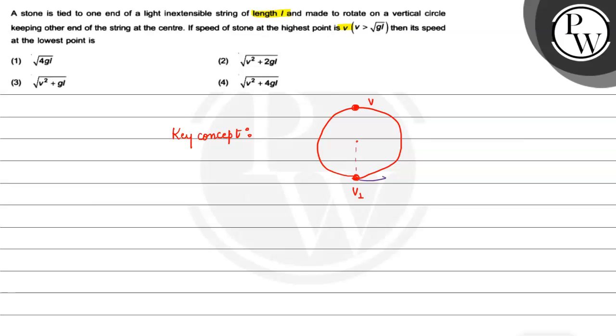At the highest point, velocity is V. At the lowest point, velocity is V1. And in this point at the highest point, the potential energy will be Mg into 2L. This is the distance from here, 2L. And kinetic energy is also present.